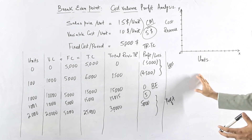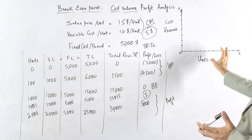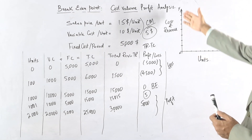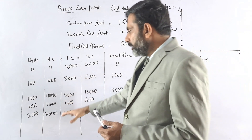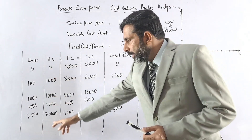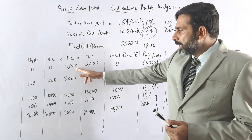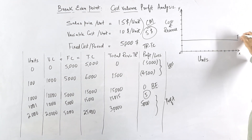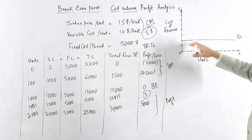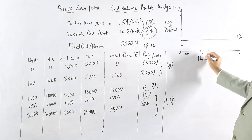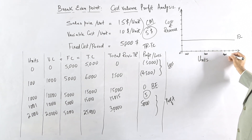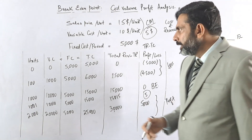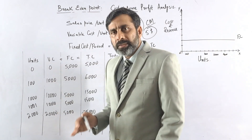Now looking at the graphical presentation: on the x-axis we have number of units — zero, 100, 1,000, 2,000, 3,000, and so on. On the y-axis we have cost and revenue. We start with the fixed cost, which is $5,000 and does not change with units, so the fixed cost line runs parallel to the x-axis.